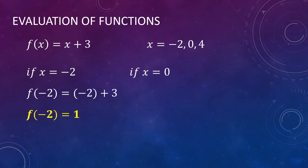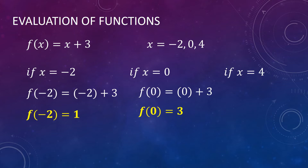Meaning the value of our function will be equal to 1 if our x is equal to negative 2. Next, if x is equal to 0, it becomes f of 0 equals 0 plus 3, so that gives us f of 0 equals 3. And lastly, if our x is equal to 4, our f of x becomes f of 4, which is equal to 4 plus 3, or f of 4 is equal to 7. So this is how we evaluate our function.